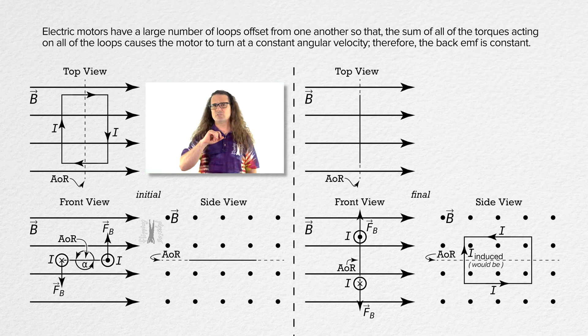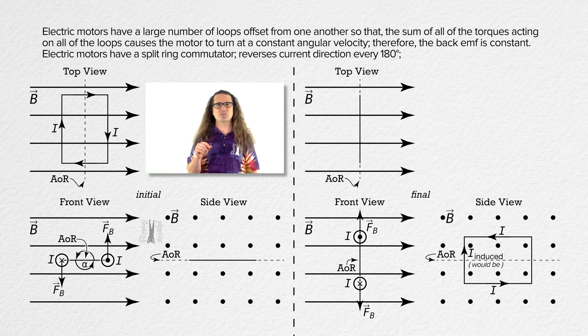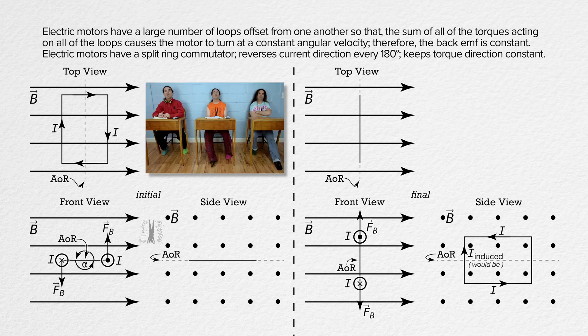It also includes something called a split ring commutator which reverses the current every 180 degrees, keeping the torque on each loop in the same direction.